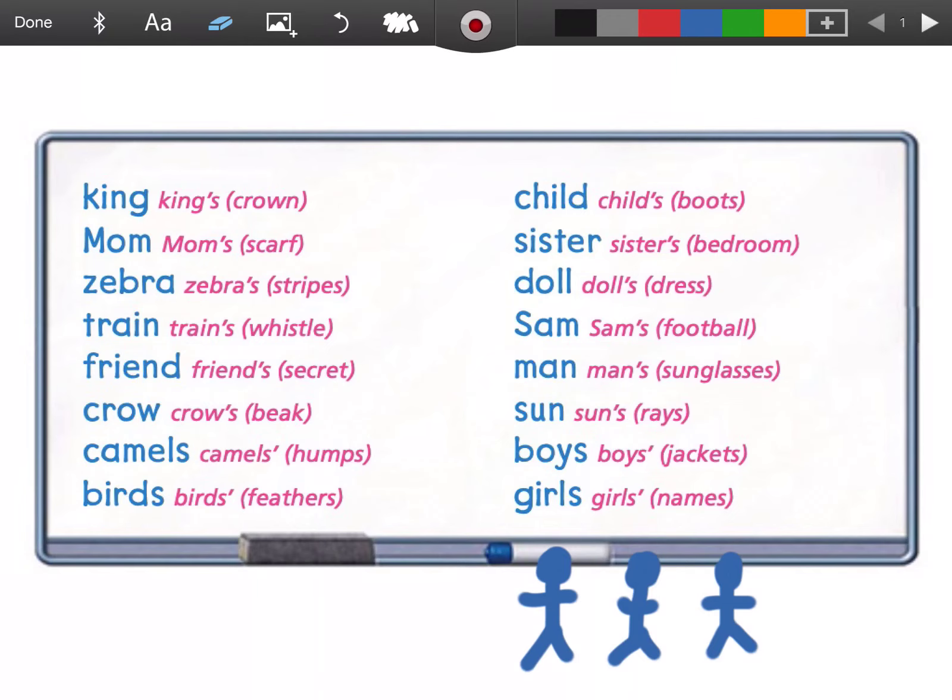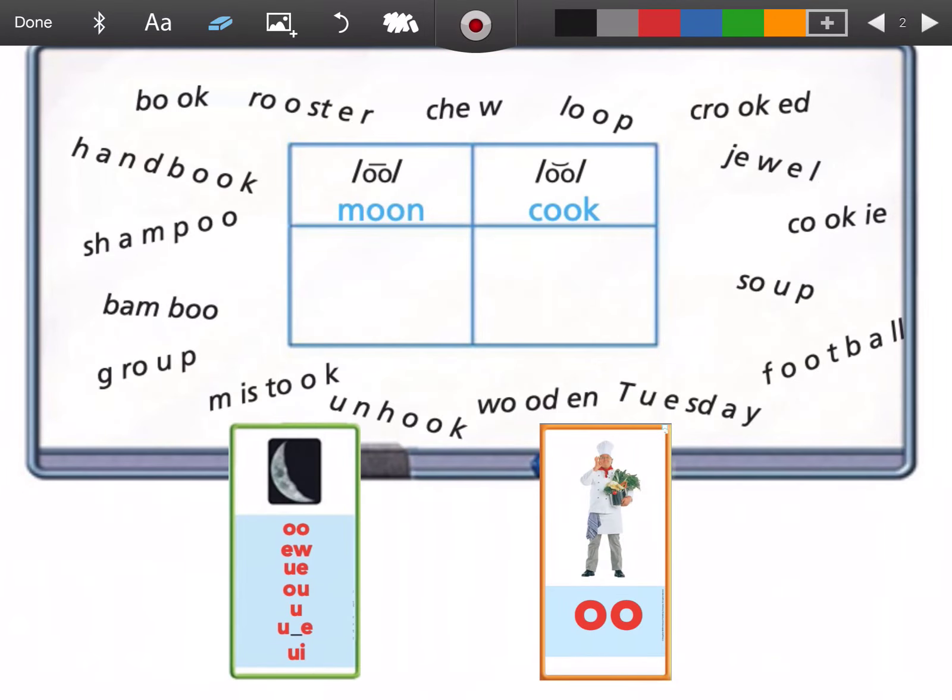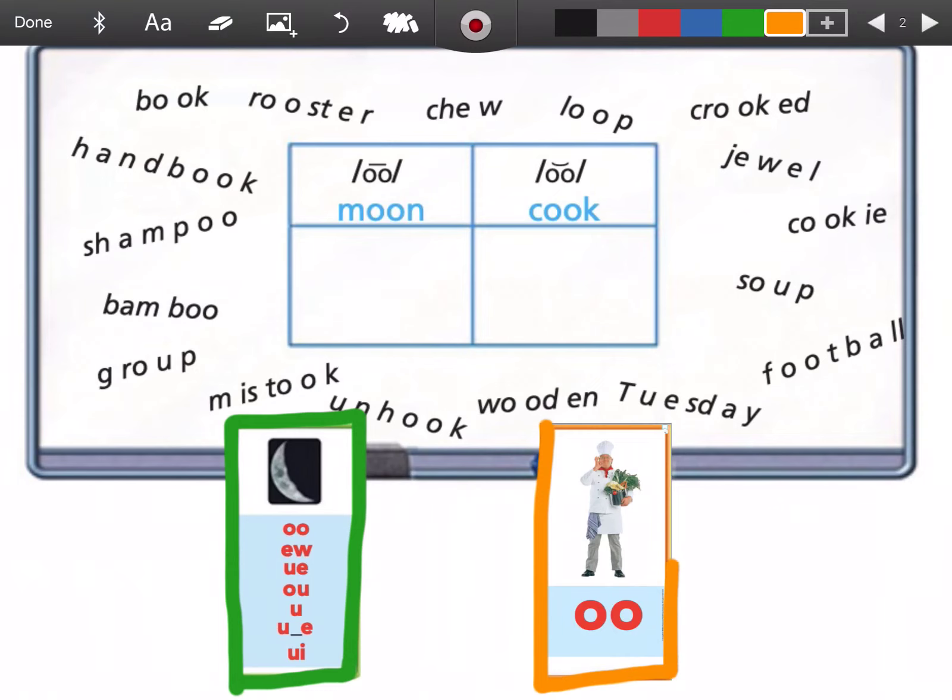Thanks for paying attention. Next, we're going to review our ooh and uh sounds. You can see that the ooh card has green around it, and the uh card has orange around it. For each of these words, we're going to tell whether it has ooh or uh.